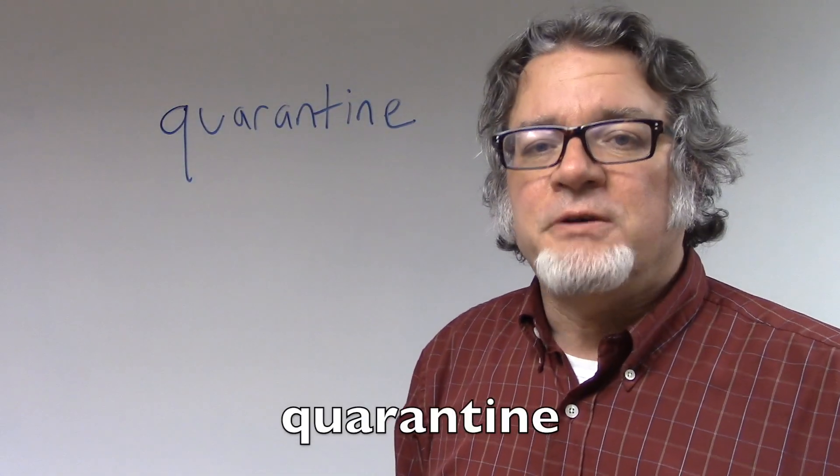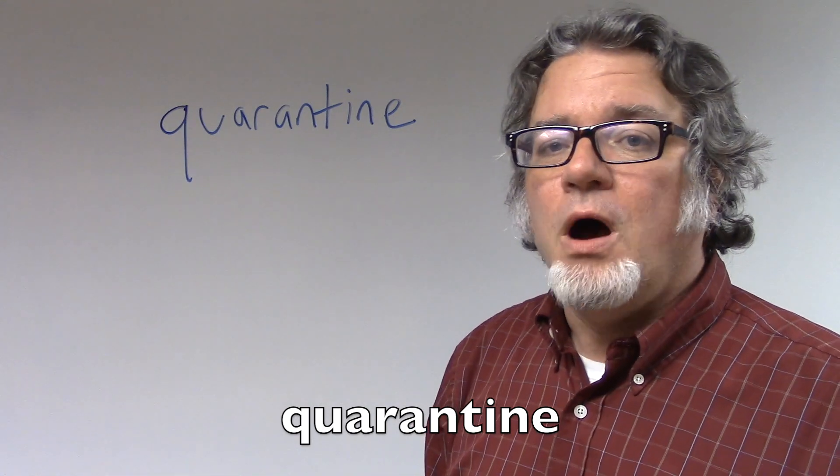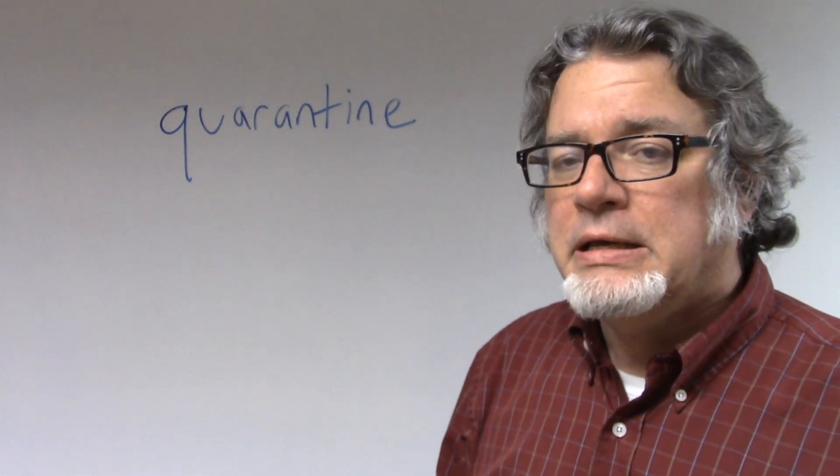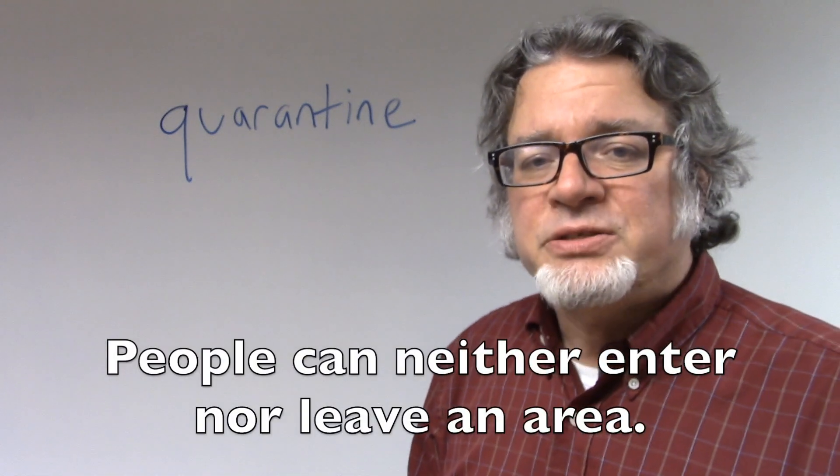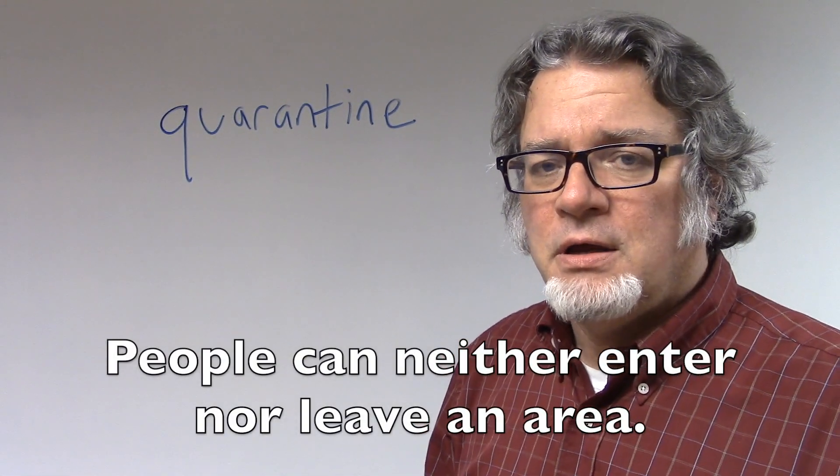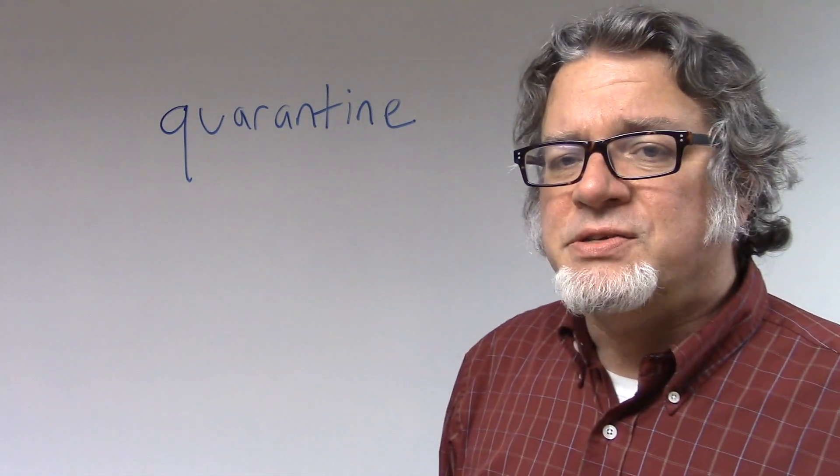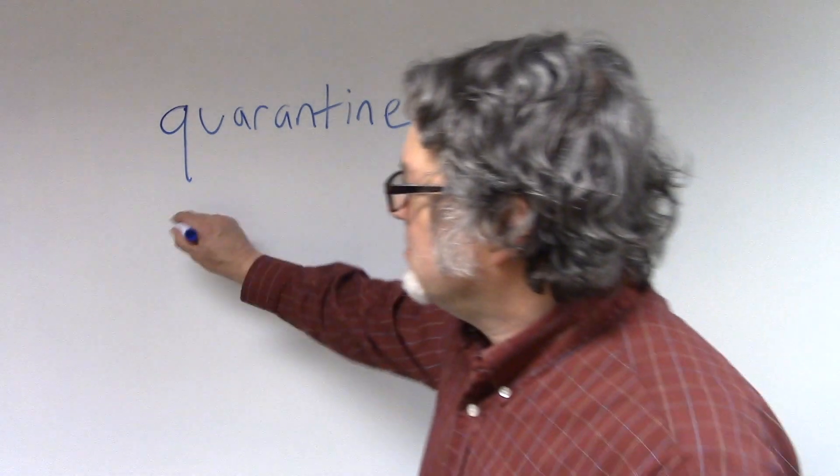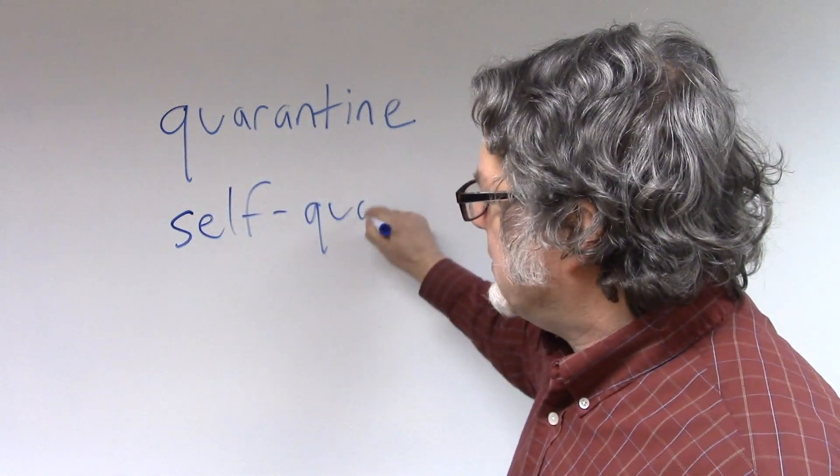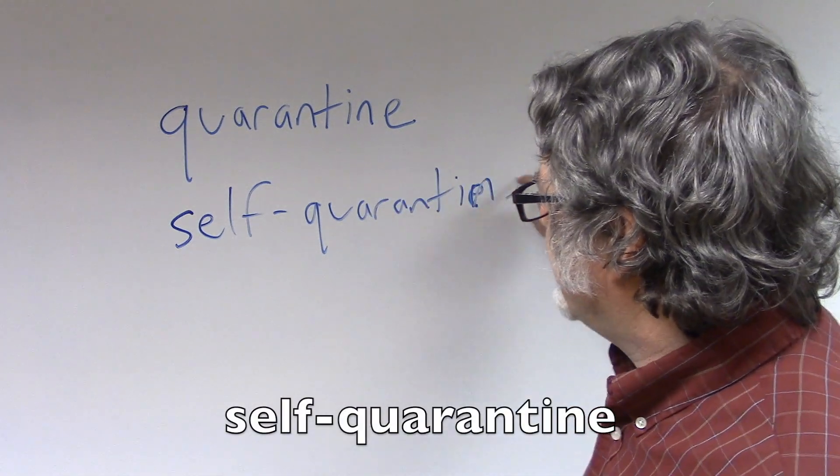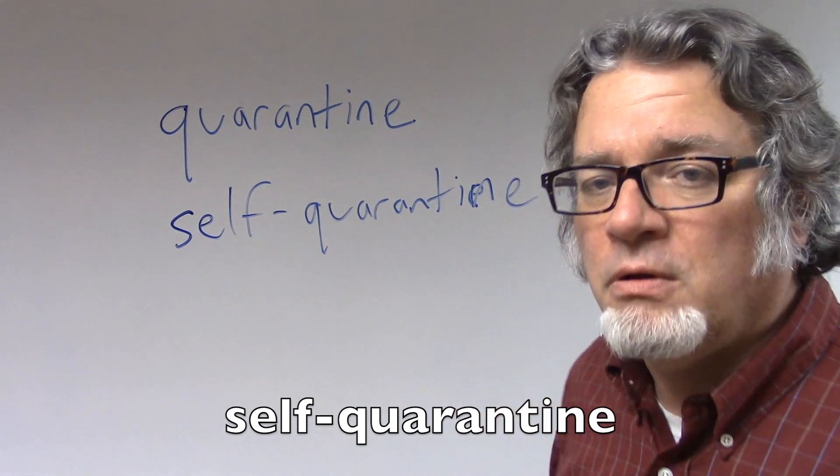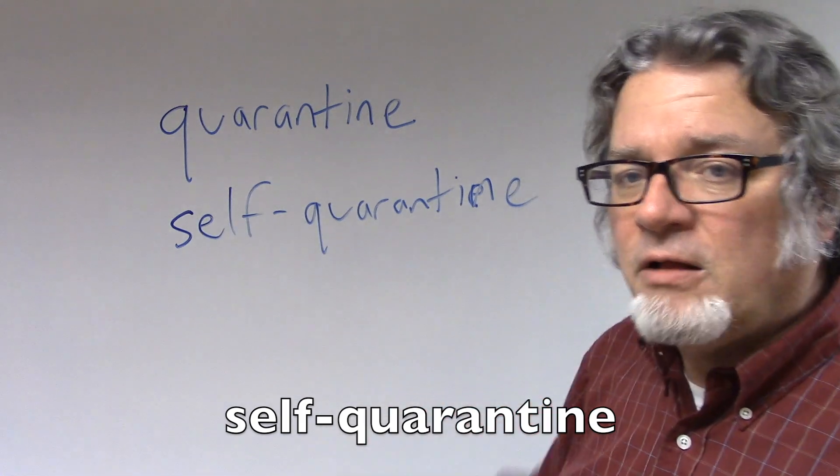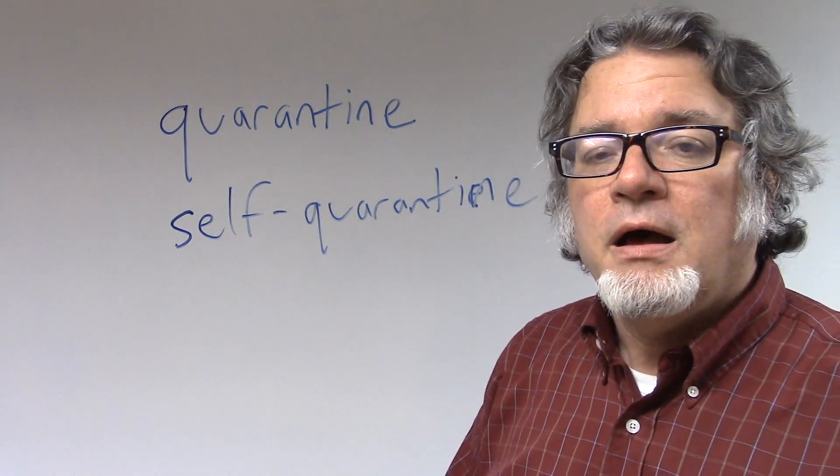A quarantine refers to an area that is sealed off to other people. So, a government can impose a quarantine and say that people can neither enter nor leave an area. Or, if a person realizes he or she has the coronavirus, then they might do a self-quarantine and keep themselves away from other people. So, if you think you have the virus, then you might go into self-quarantine and stay away from other people.